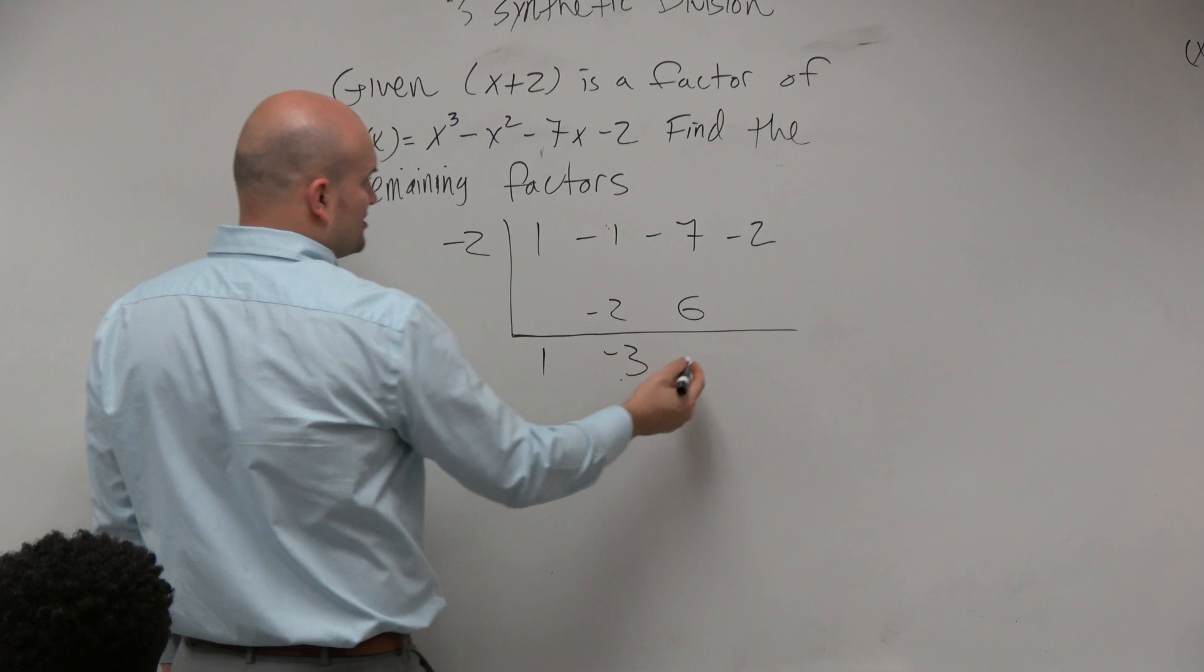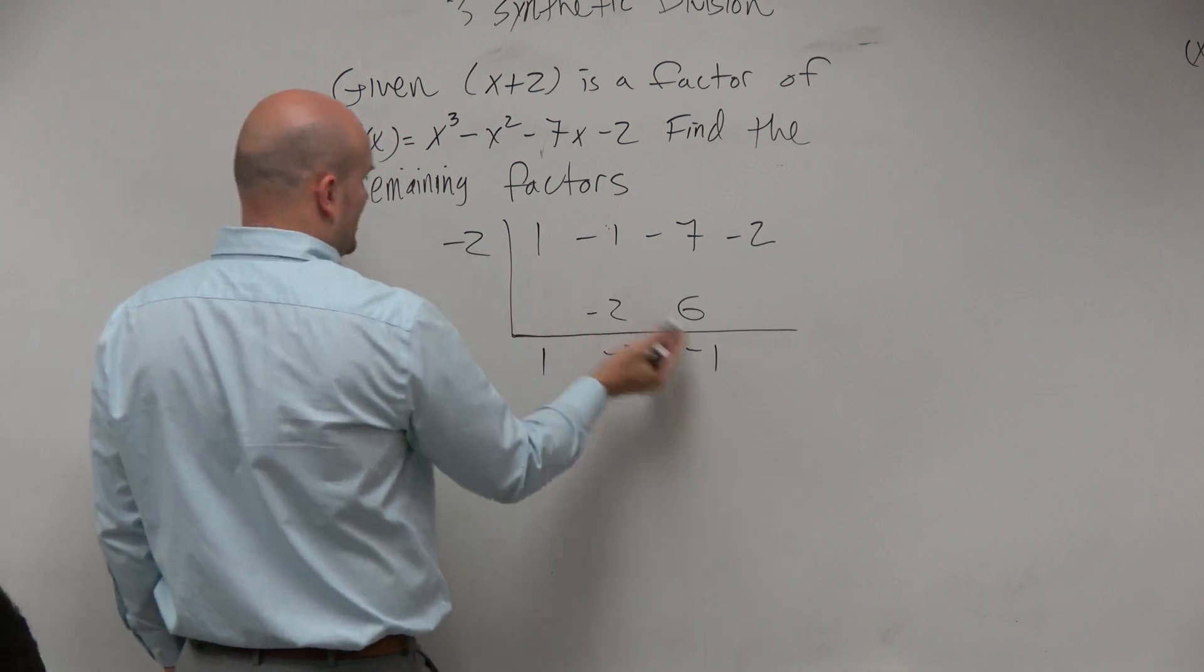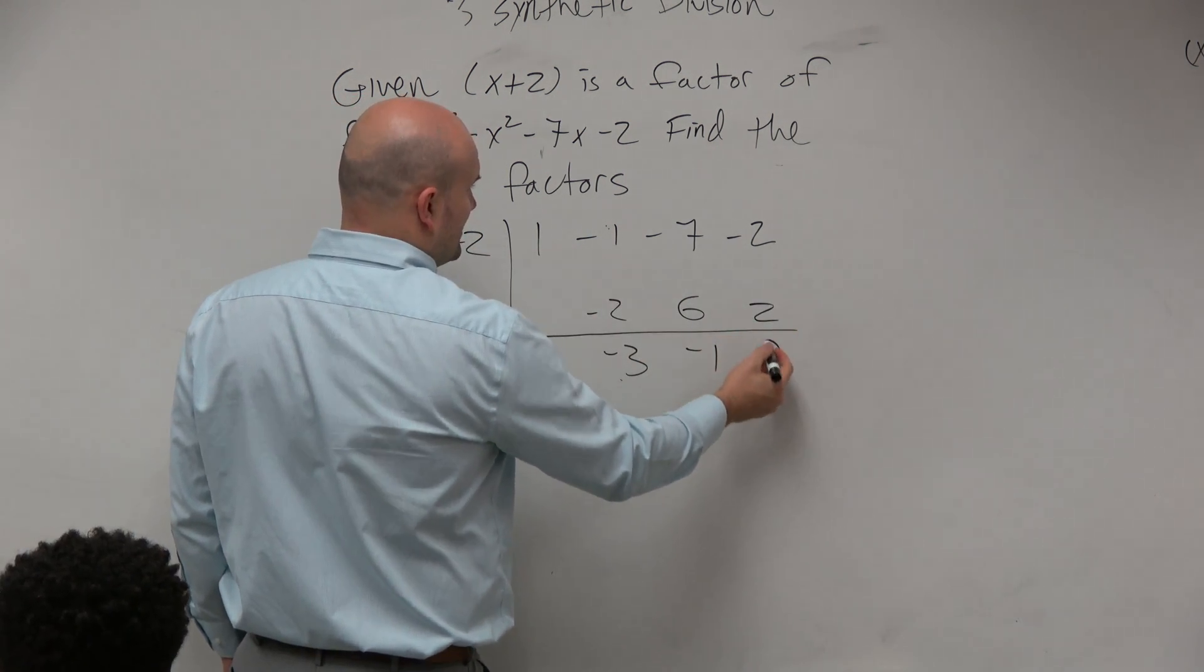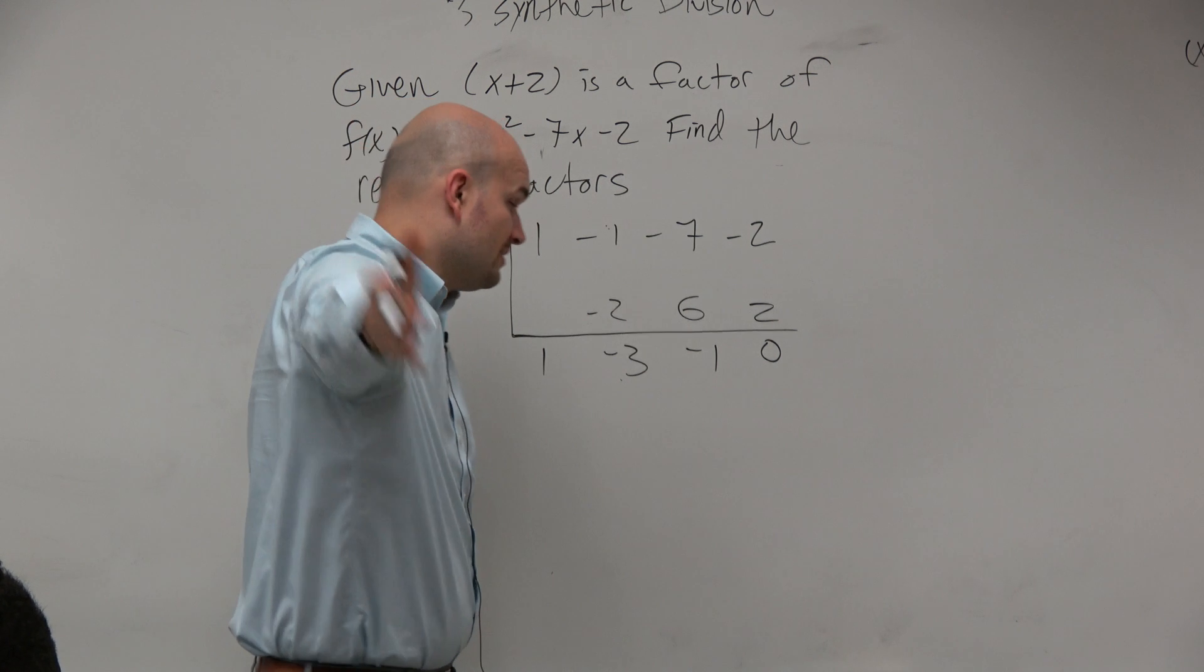Negative 7 plus 6 is going to be negative 1. Negative 1 times 2 is going to be a positive 2. Remainder 0, which Erica said, right? Good job, Erica.